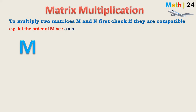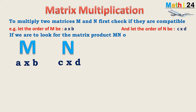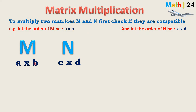Let the order of matrix M be A×B — that is, A rows and B columns. And let matrix N have order C×D — that is, C rows and D columns. If we are to find the matrix product MN, we must check if the number of columns in the first matrix equals the number of rows in the second matrix. That is the condition for compatibility.